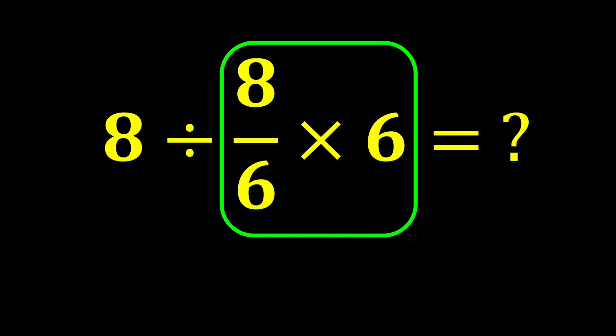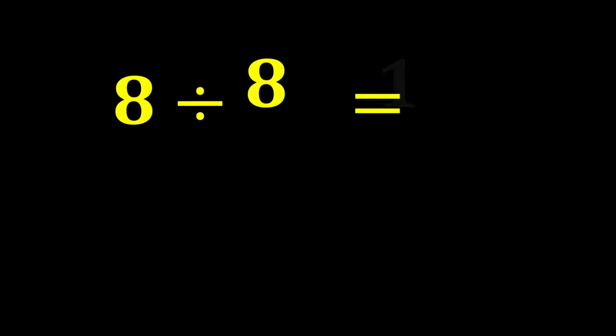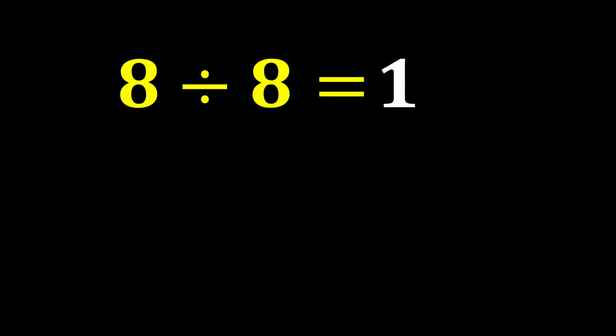First, we perform this multiplication: 8 over 6 multiplied by 6. The 6's simplify with each other, and only 8 remains. In the end, 8 divided by 8 gives us 1, and our final answer is 1.